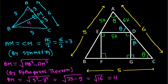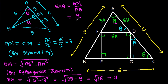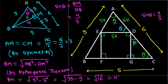And this angle is theta. So sin theta equals the perpendicular over the hypotenuse, which is 4 over AB, that is 4 over 5. So we get sin theta equals 4 over 5.